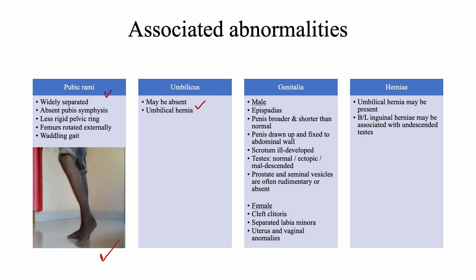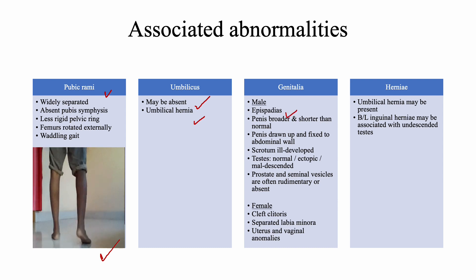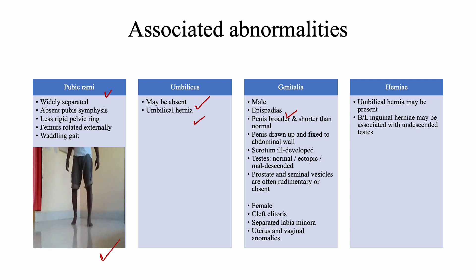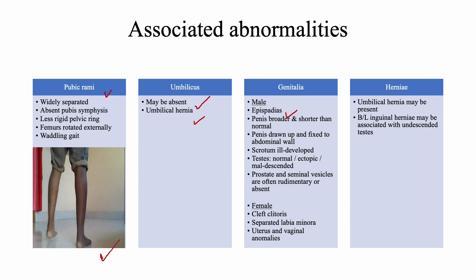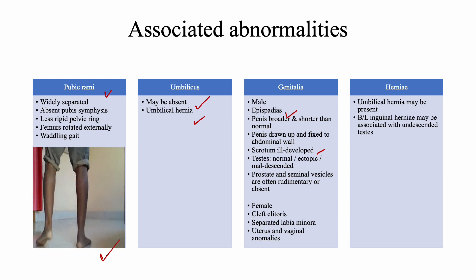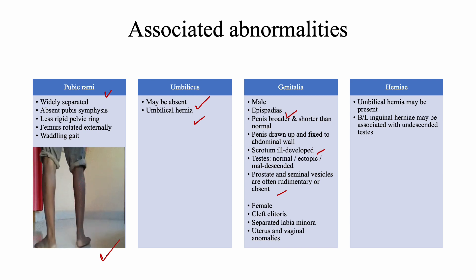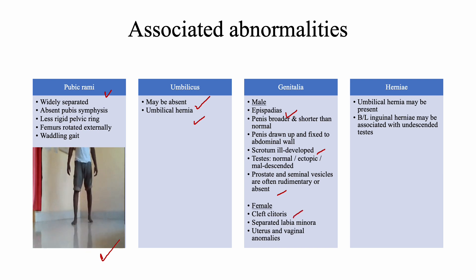Regarding umbilical associations, the umbilicus may be absent or there may be an umbilical hernia. In males, epispadias is almost always associated with bladder exstrophy; the penis becomes broader and shorter than normal, is drawn up and fixed to the abdominal wall, and the scrotum is ill-developed. The testes may be normal, ectopic, or mal-descended. The prostate and seminal vesicles are often rudimentary or absent.